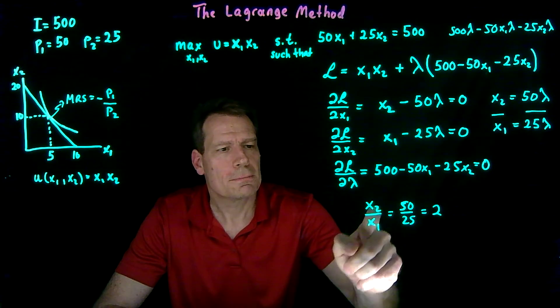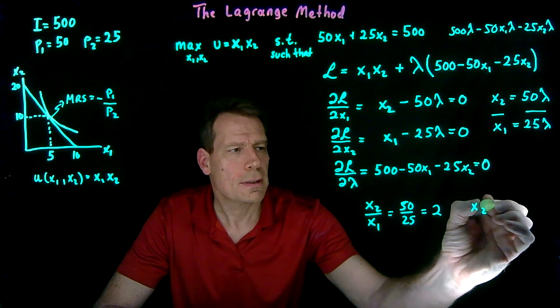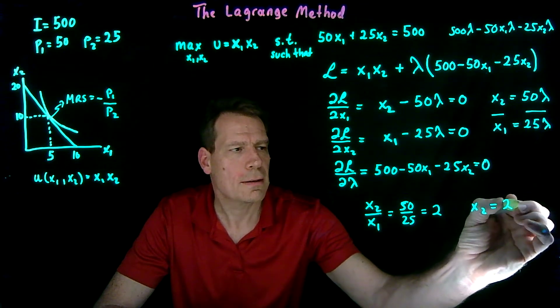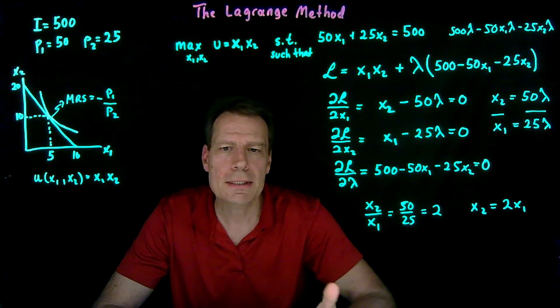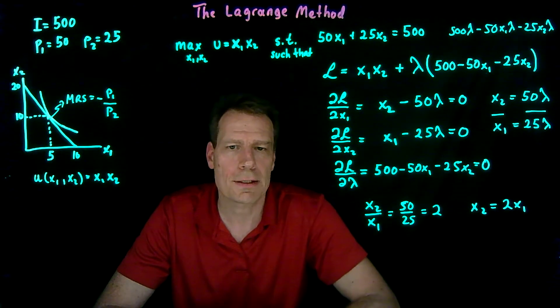Then we can just take the x1 to the other side and say, well, x2 is going to be twice x1. We can already see us moving to this solution. x2 turns out to be twice of x1.